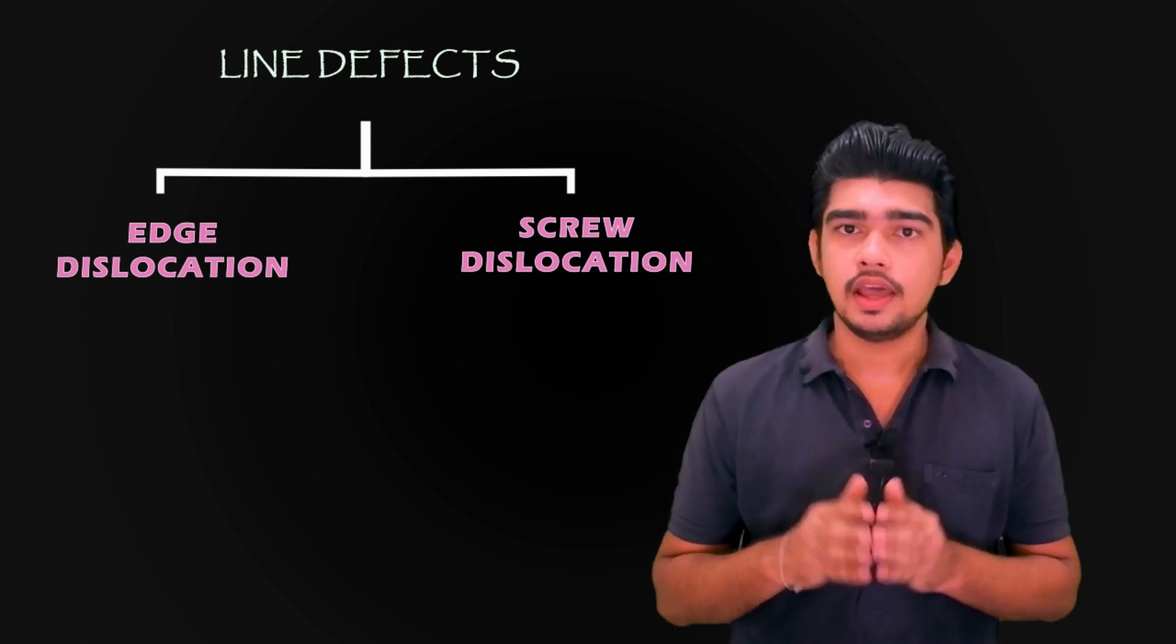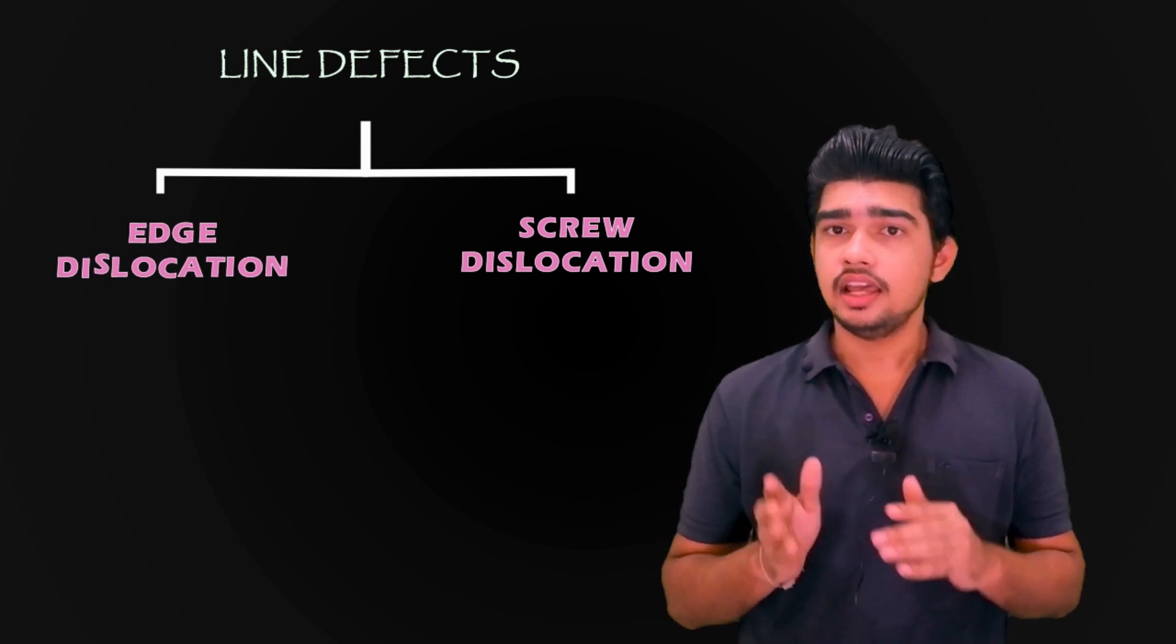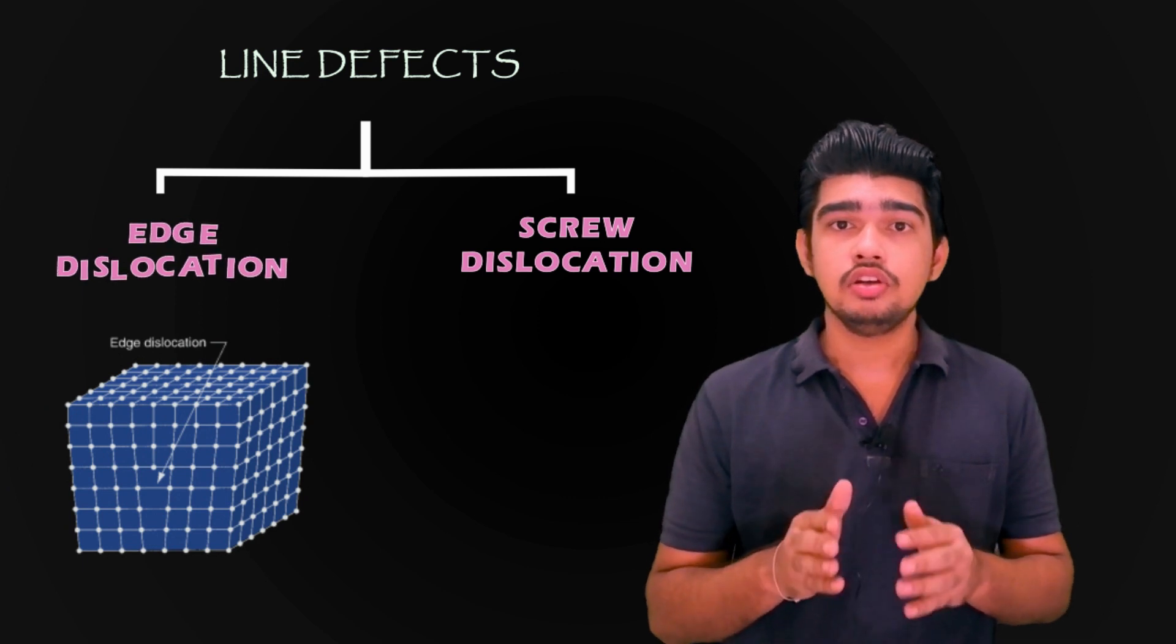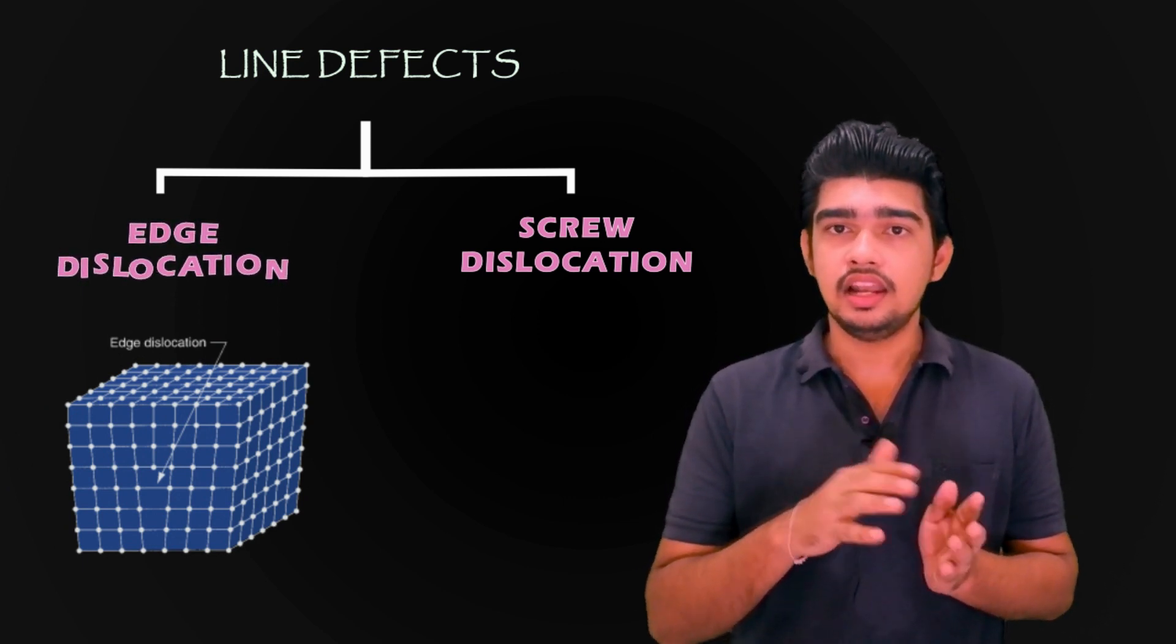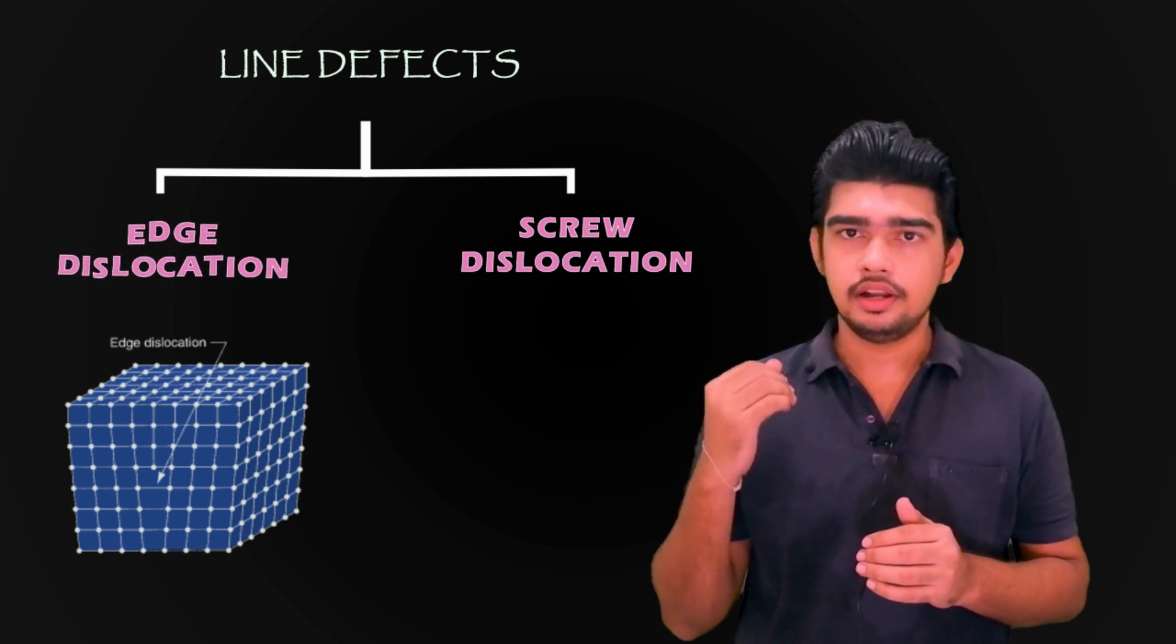First, let us see about edge dislocation. An edge dislocation is the edge of an extra plane of atoms that exist in the lattice, as illustrated in the image.